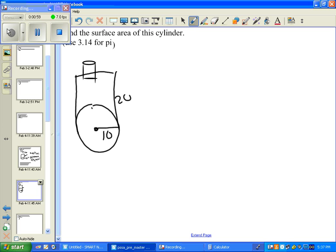So our formula for circumference is C equals 2 pi times the radius. The radius in this case is 10. 2 pi is 6.28. So the circumference for the bottom equals 62.8.